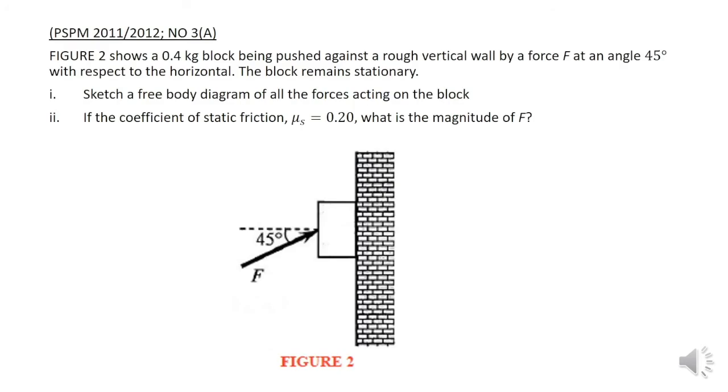Let's start solving the second question, PSPM 2011-2012. We have a 0.4 kg block being pushed against a rough vertical wall. Rough vertical wall means we have friction. It's pushed by a force F at an angle 45°. Since the block remains stationary, this means F net equals zero, and we choose our static friction. The first question is to sketch the free body diagram, and the second is to find the magnitude of the pushing force.